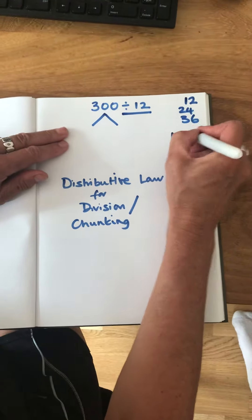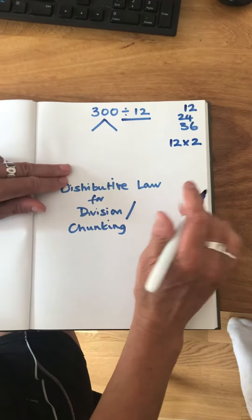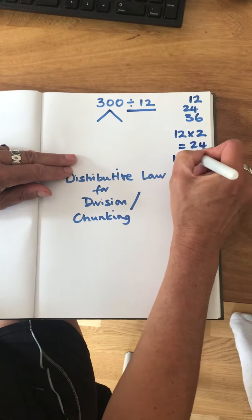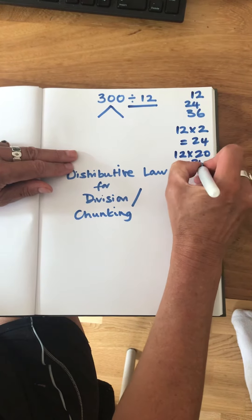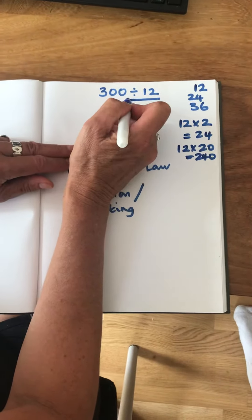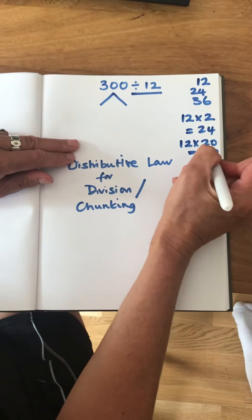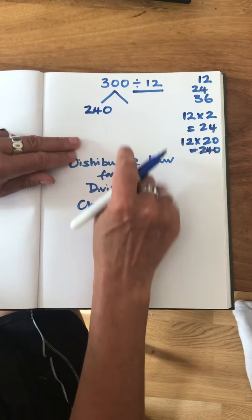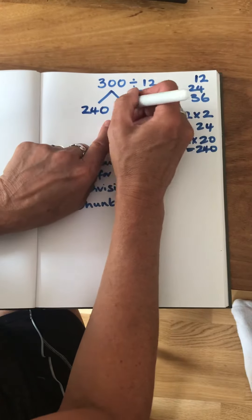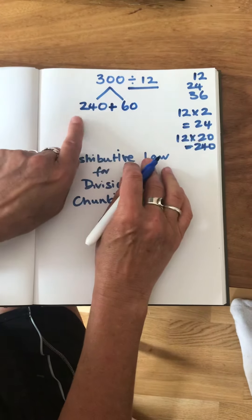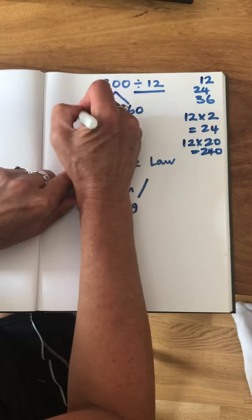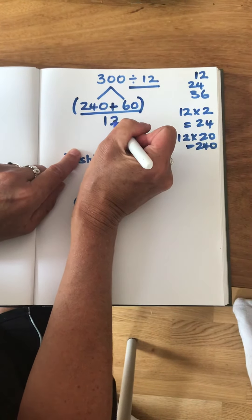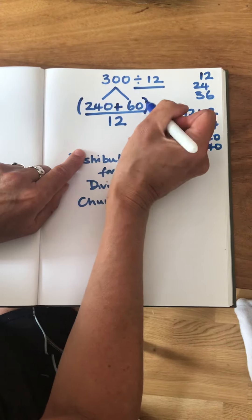I know that 12 multiplied by 2 is 24, therefore 12 multiplied by 20 is 240. So I'm going to partition 300 by multiples of 12, and the first multiple of 12 I'm going to take is 240. What's left of my 300 is 60. So 240 add 60 is going to be divided by 12 — I'm distributing my 12 across the 240 and the 60.